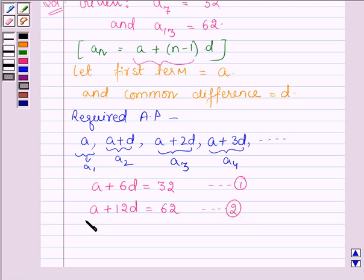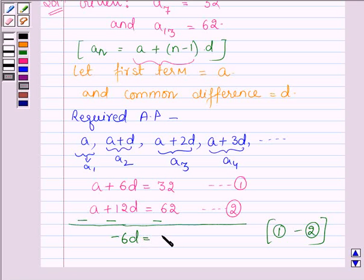Now, let us subtract the second equation from the first one to get the value of D. We get minus 6D is equal to minus 30, or D is equal to 5.